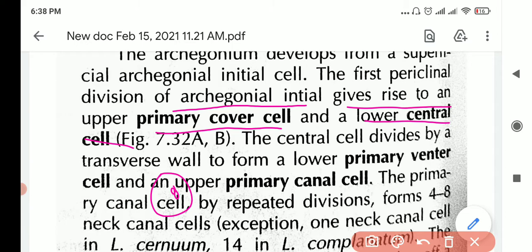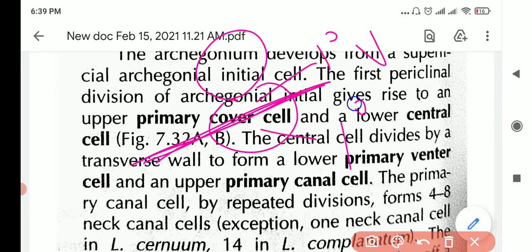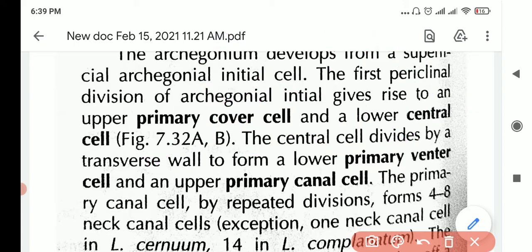We have archegonial initial to give rise to archegonium. This archegonial initial divides this way and we get an upper primary cover cell and a lower central cell. Then this central cell will divide upper and lower to form a primary venter cell and a primary canal cell. Then the primary canal cell will divide repeatedly and form 4 to 8 neck canal cells.